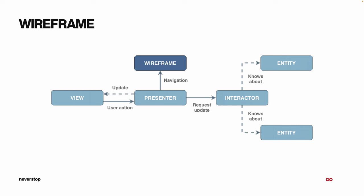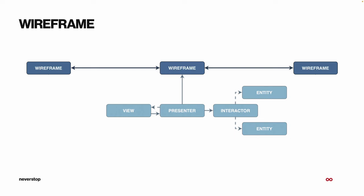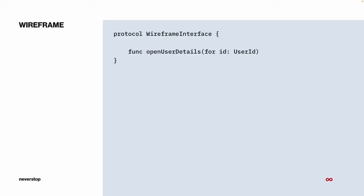Moving on to the Wireframe — the R which stands for Router. The Wireframe is the part of the Viper module which takes care of all navigation. In a standard MVC architecture, all the code in the view controller that handles segues, popping, presenting, and pushing view controllers — all of that is removed and goes to the Wireframe. The Wireframe also handles dependency injection, because when multiple Viper modules are placed next to each other they communicate through their wireframes, making it the obvious entry point for dependency injection into a given module.